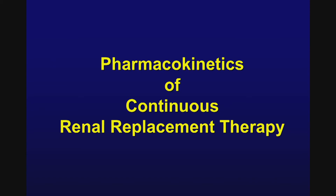The pharmacokinetics of renal replacement therapy are similar to what you would see in intermittent hemodialysis. It's important to understand how effective extracorporeal clearance will be by looking at the total of all forms of clearance — renal, non-renal, and extracorporeal. As a rule of thumb, if the extracorporeal clearance contribution is greater than 25 to 35%, you will effectively remove a drug or solute. The fraction of extracorporeal clearance equals extracorporeal clearance divided by the sum of extracorporeal clearance, residual renal clearance, and non-renal clearance.